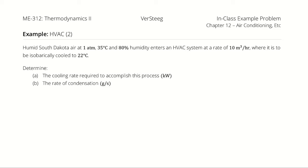Humid South Dakota air at 1 atmosphere, 35 degrees Celsius and 80% humidity enters an HVAC system at a rate of 10 cubic meters per hour where it is to be isobarically cooled to 22 degrees Celsius. We want to know the cooling rate required to accomplish this process and how much condensation occurs.